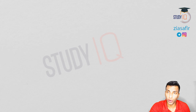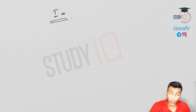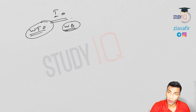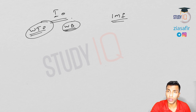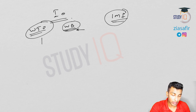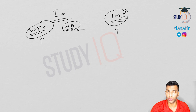Hello students, welcome to Study IQ. We will continue our discussion on economy — we are in the module on international organizations. We have already completed WTO and World Bank. Now in this session we will talk about IMF in detail. I will also make some comparison with World Bank, and in the next session we will cover recent IMF reforms. I have taken two sessions for World Bank, seven for WTO, and two for IMF.